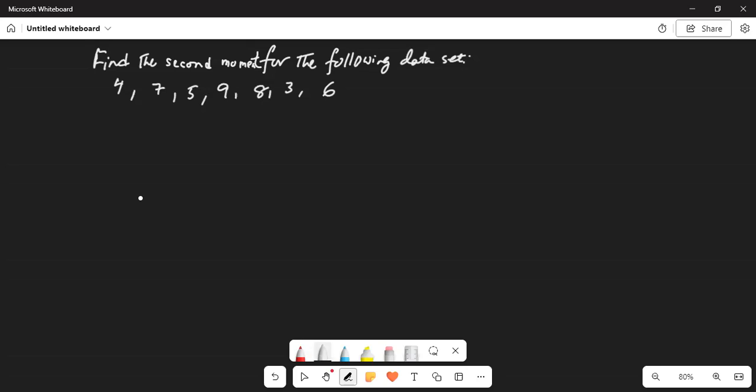So, if we call that second moment, the strategy will be to use the formula for the second moment which is average of all the squares. Okay? So, second moment.